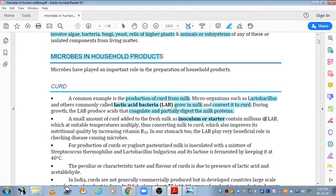Inoculum and starter contain millions of LAB which at suitable temperature multiply, thus converting milk into curd which also improves nutritional quality by increasing vitamin B12. In our stomach, LAB plays a very beneficial role in checking disease causing microbes. So there are two functions: one is the nutritional quality and vitamin B12, and they kill disease causing microbes in our digestive system.